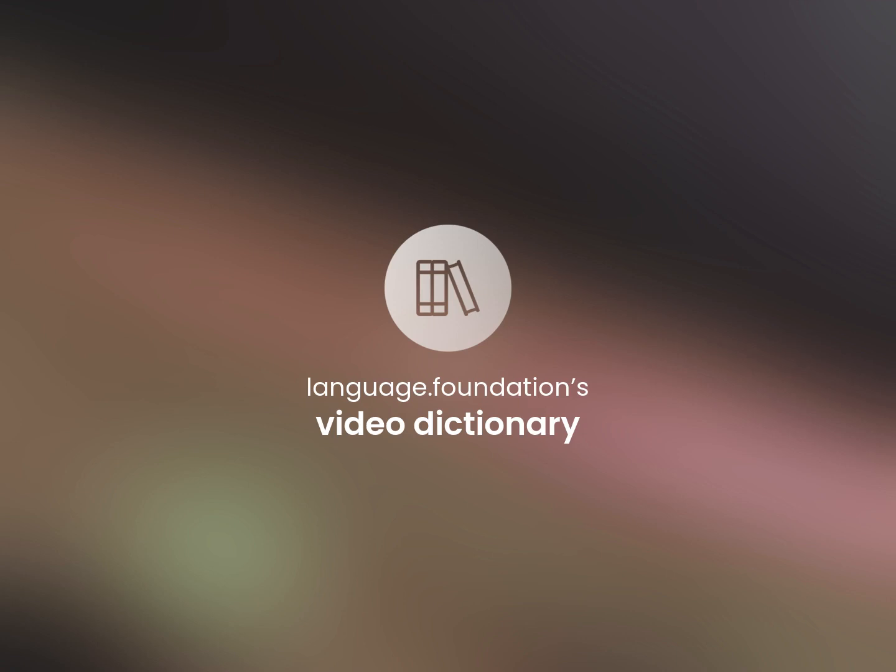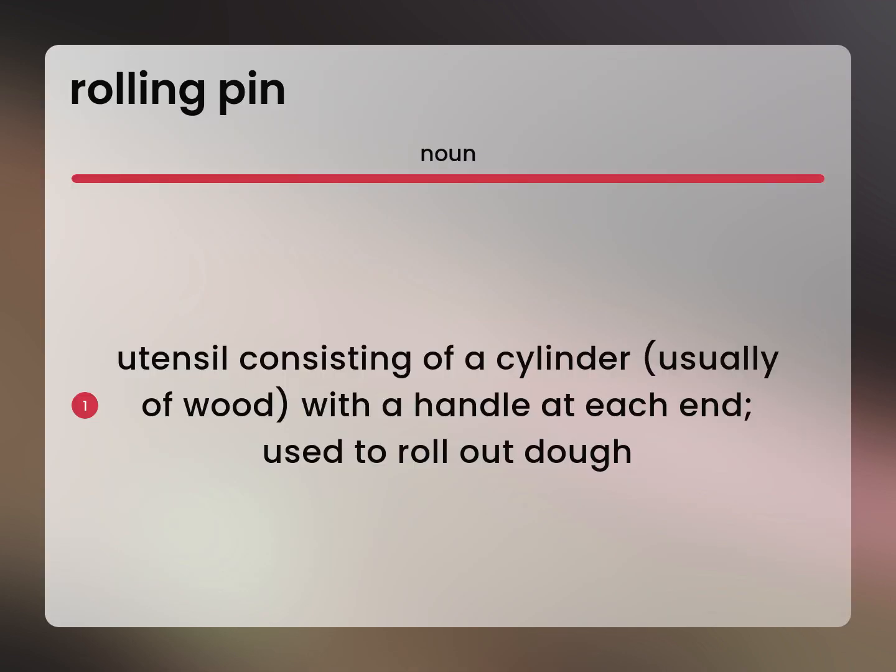Language.Foundation's Video Dictionary, helping you achieve understanding. Utensil consisting of a cylinder, usually of wood, with a handle at each end. Used to roll out dough.